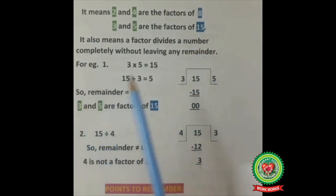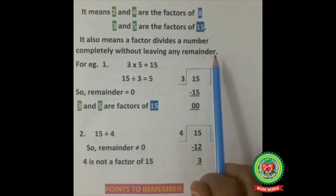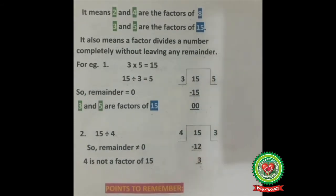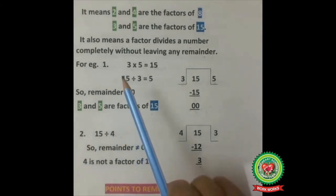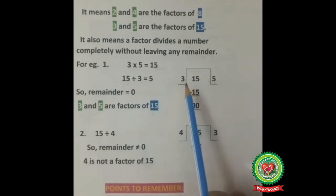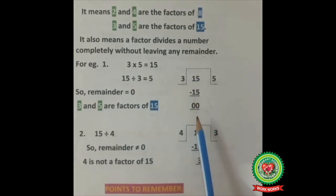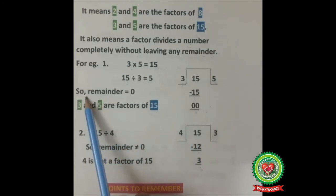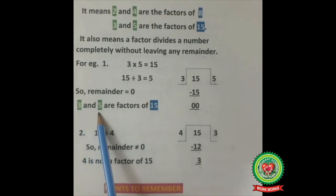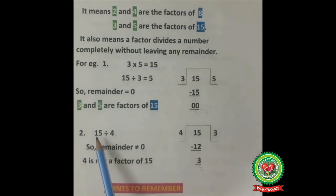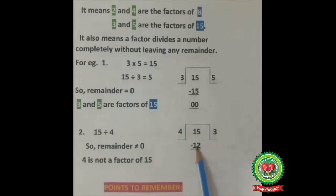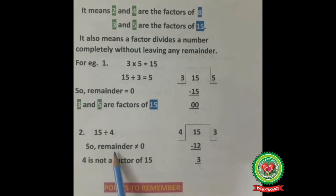It also means a factor divides a number completely without leaving any remainder — the remainder should be 0. For example, 15 divided by 3 equals 5 with remainder 0, so 3 and 5 are factors of 15. But is 15 divisible by 4? 4 times 3 is 12, remainder is 3 — not 0 — so 4 is not a factor of 15.